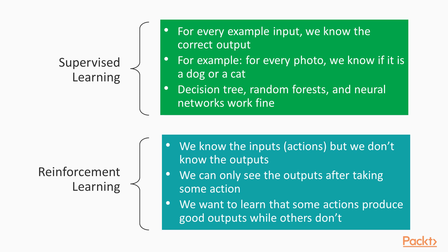But suppose you don't have training examples. Suppose the problem has never been solved before and there's no training data. Then we might be able to use reinforcement learning. We need to know the kinds of actions that can be taken, we need to be able to observe at least some of the effects of the action, and we need to know if the effects of the action were good or bad. That's all we need.